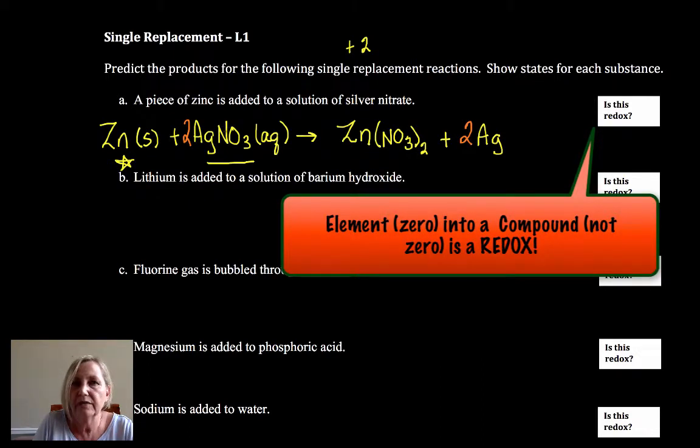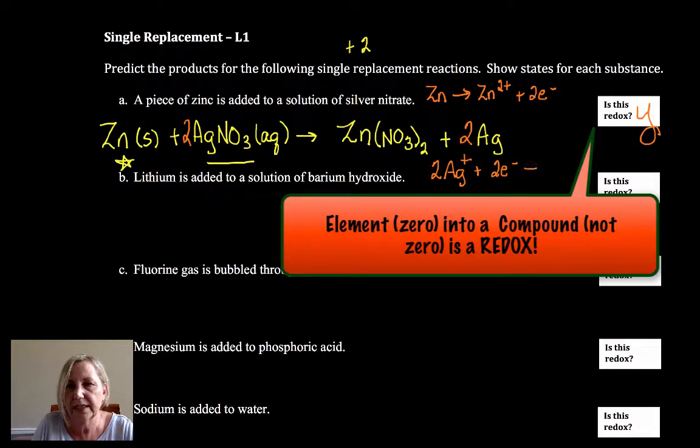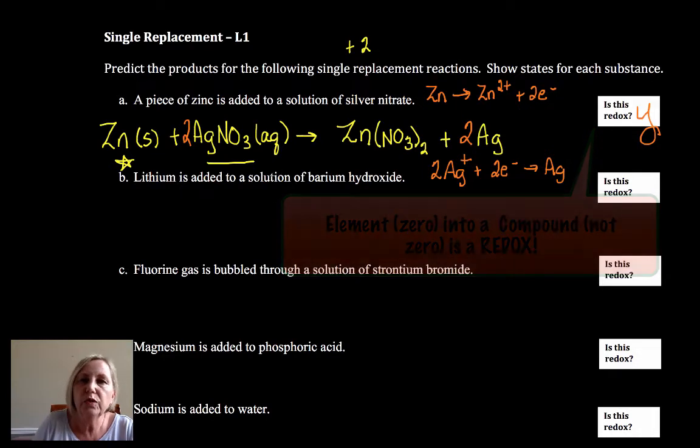Here, it's in a compound. The silver is not zero. On the product side, it's zero. So when you see elements going in and out of compounds, that's usually a quick estimation or guesstimate that it's a redox. In actuality, what happened is zinc lost two electrons and two silvers, two silver ions, each gained electrons. So there was oxidation and reduction. And you will find that single replacement is always a redox when it happens.